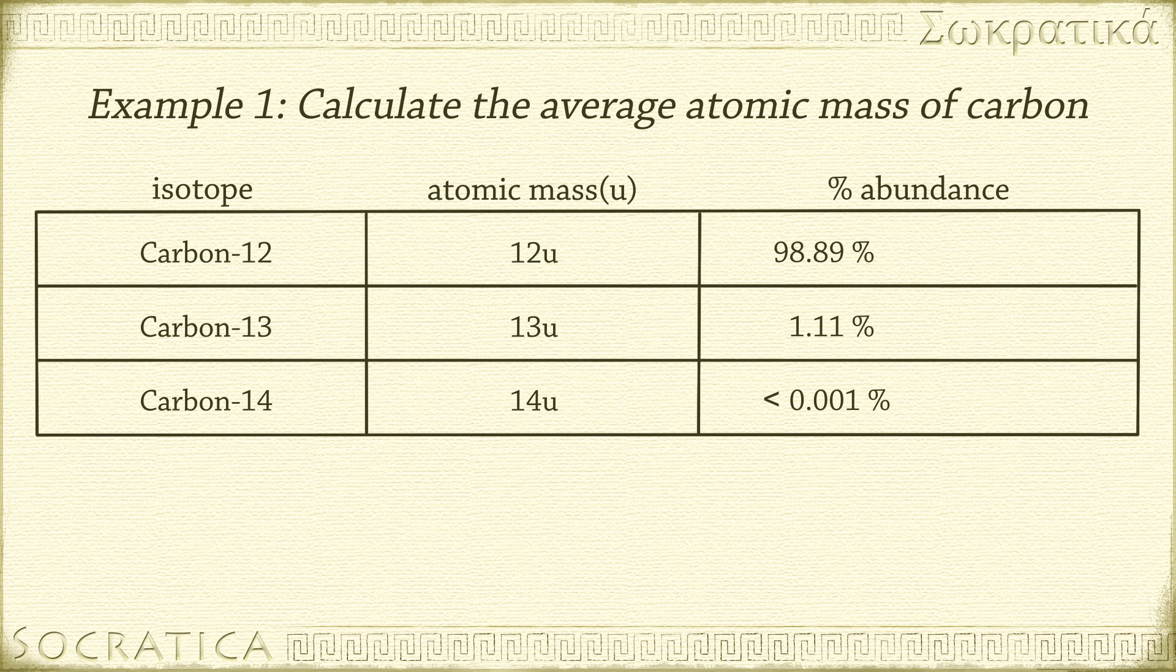The amount of carbon-14 is so small, it's less than one thousandth of one percent of the carbon present on Earth. So it won't play a part in our weighted average. It's just not significant enough to affect the mass if we go to two decimal places. When we measure and then round to two decimal places,